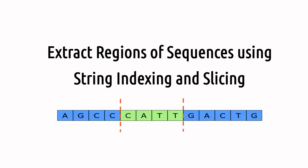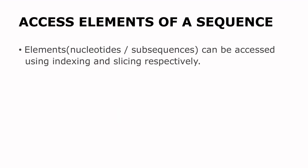Hello guys, welcome once again to another tutorial session on Python programming for biologists. I release a video every Tuesday so you should come by to watch these exciting videos. In today's video I'm going to show you how to extract regions of a sequence using string indexing and slicing. There are times where you want to access nucleotides or subsequences of a sequence rather than the entire sequence, and so to do that we use indexing for individual nucleotides and we use slicing for subsequences.